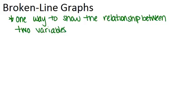In this video we will learn all about broken-line graphs. Broken-line graphs are one way to show the relationship between two variables. Broken-line graphs are most often used to show a change in something over time, like a change in distance over time or a change in temperature over time.